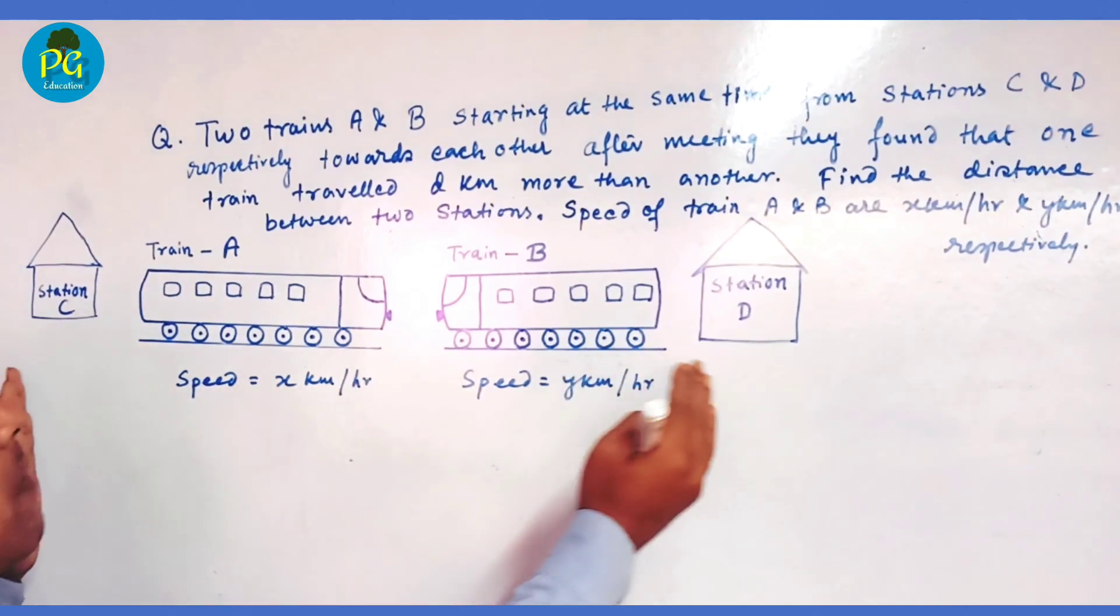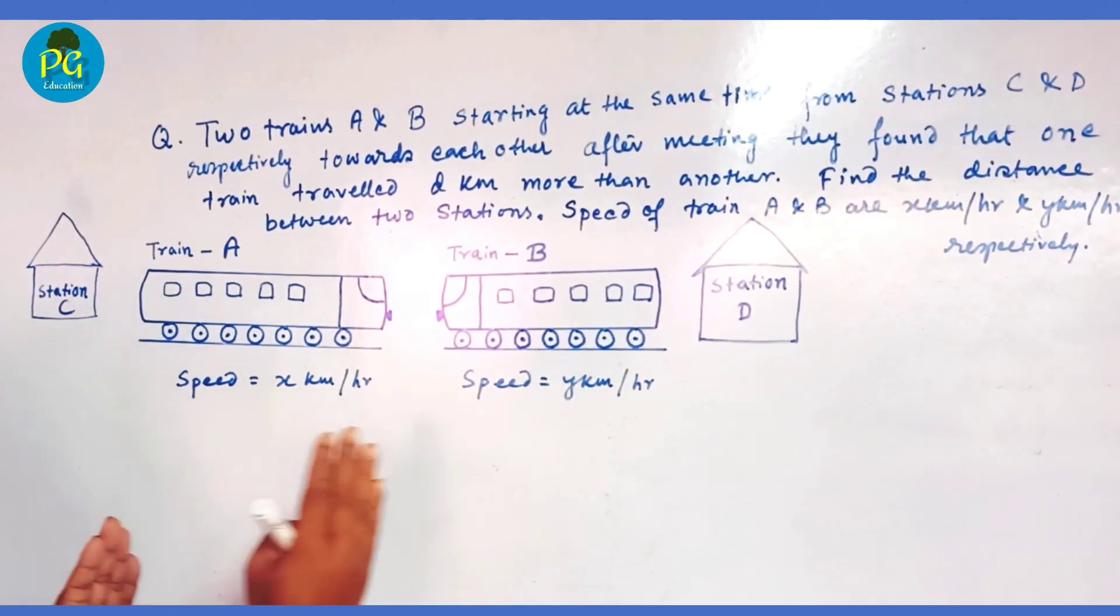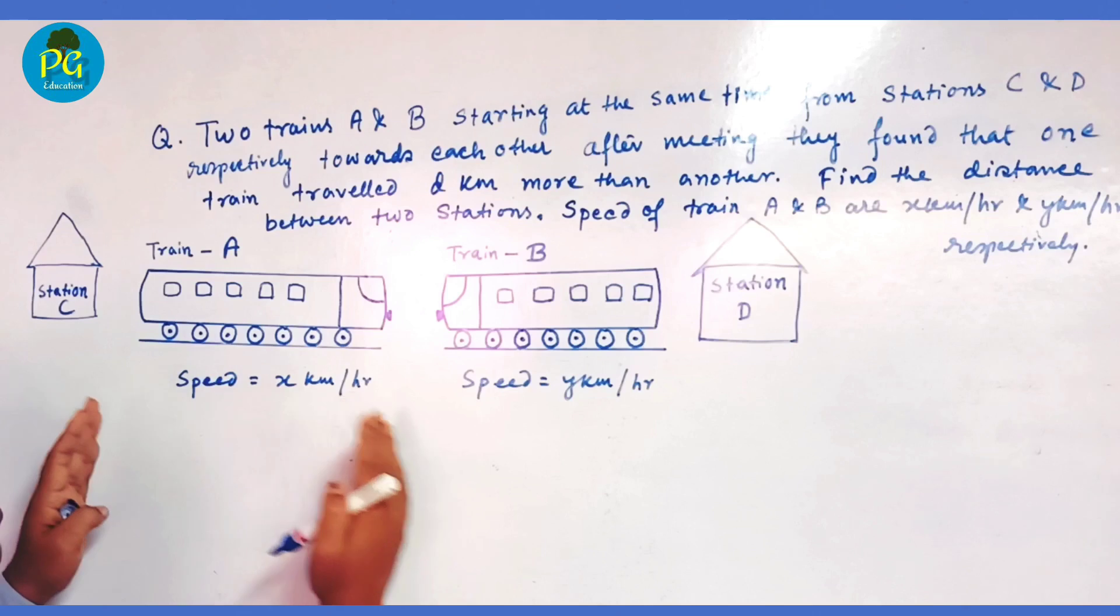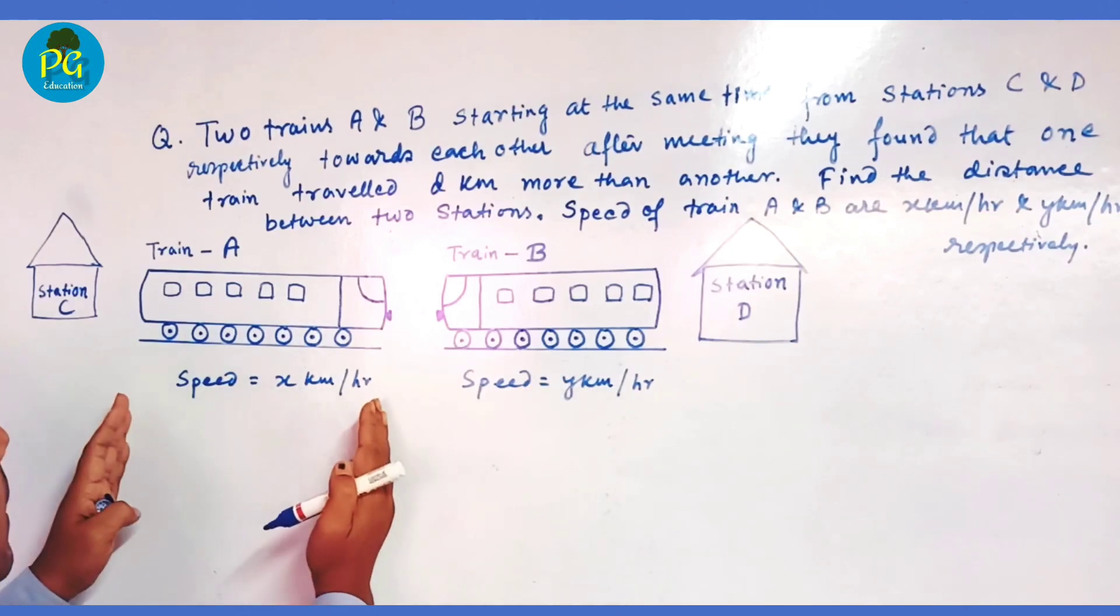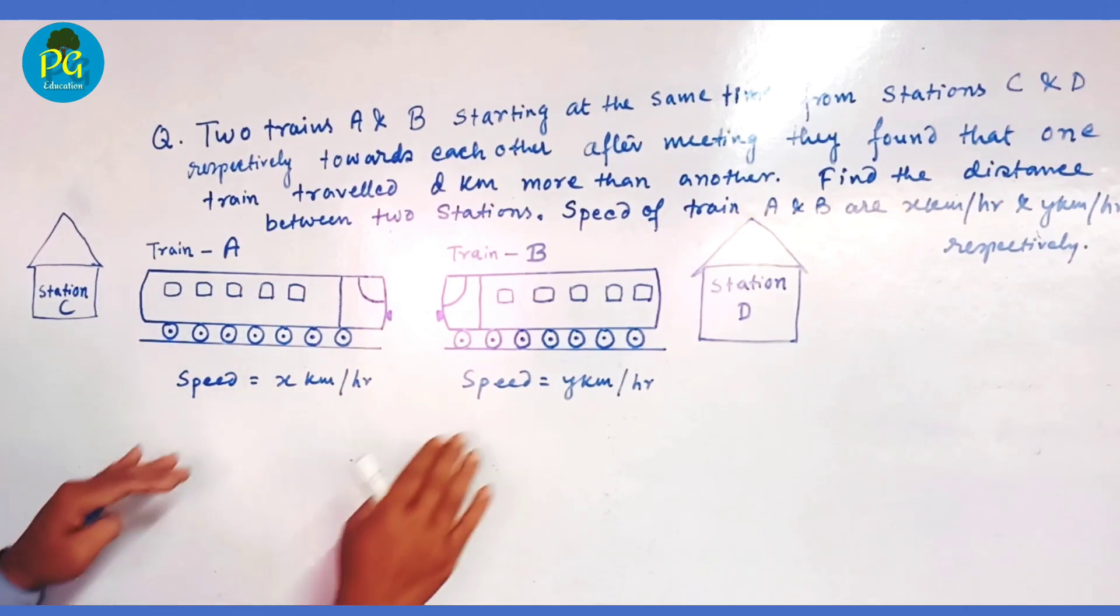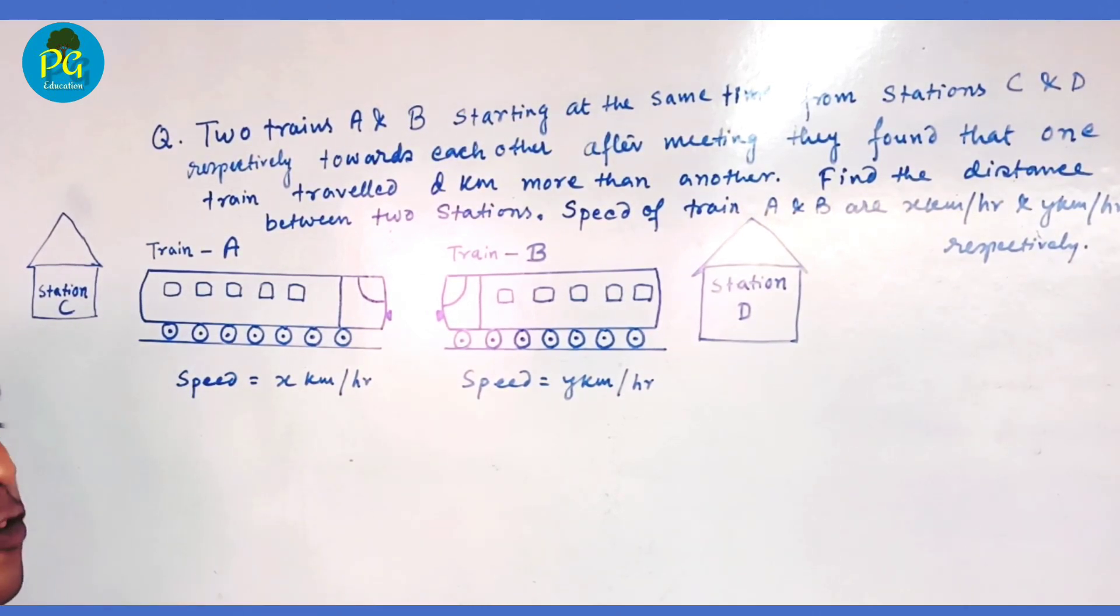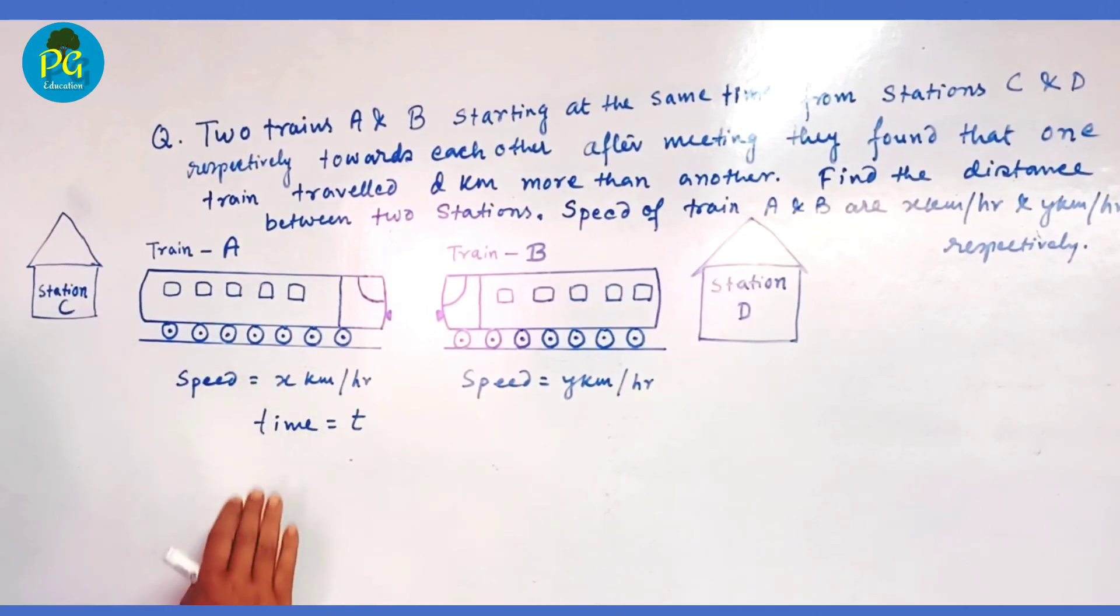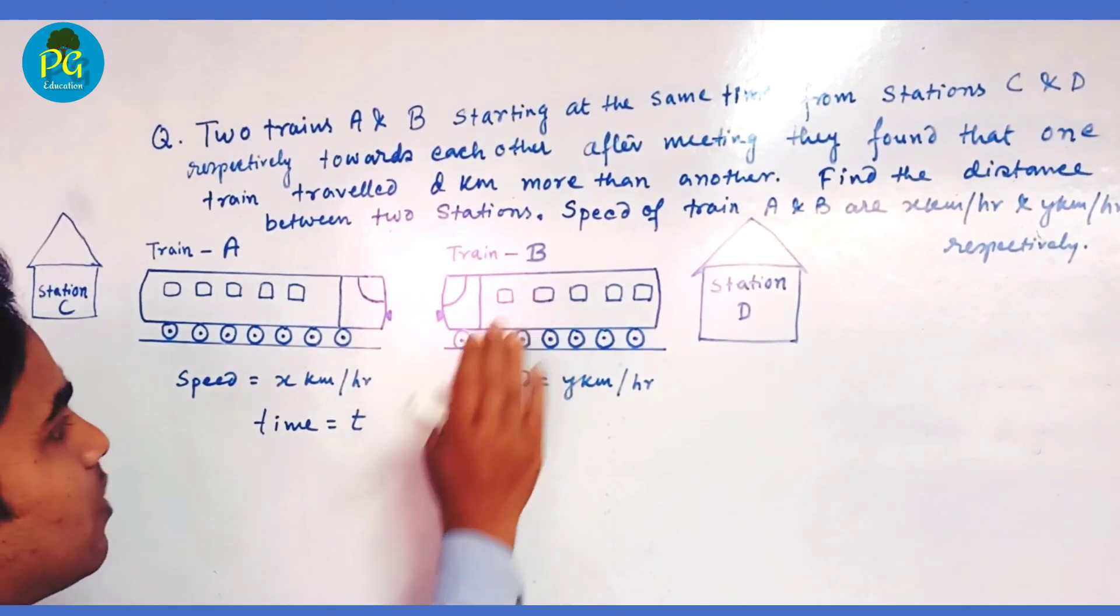Starting at the same time, train A and B meet each other, that means both of them traveled for the same time. Let the time be T. That means train A has traveled for time T and train B also has traveled for time T.